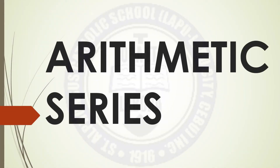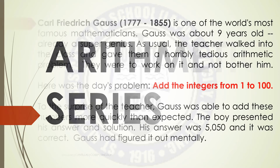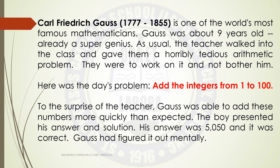Arithmetic Series. Carl Friedrich Gauss is one of the world's most famous mathematicians. Gauss was about 9 years old, already a super genius.